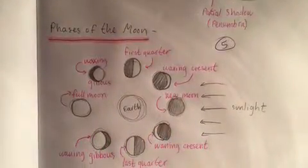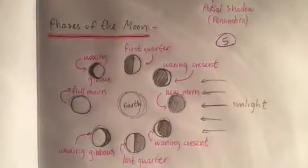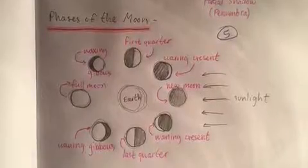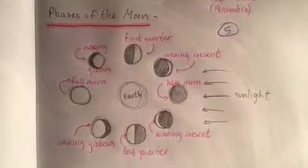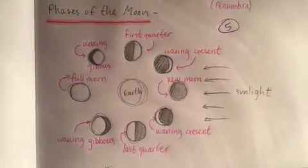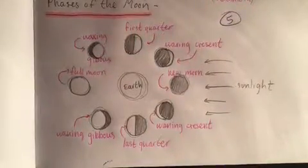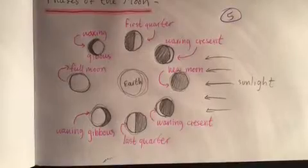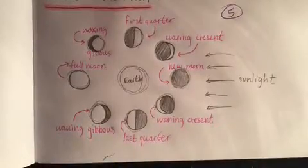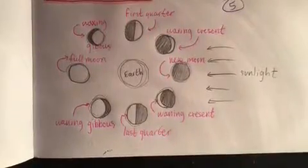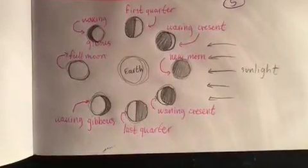So for the phases of the Moon: there's the full moon, the waxing gibbous, first quarter, waxing crescent, then the new moon, then waning crescent, last quarter, and waning gibbous, back to the full moon.